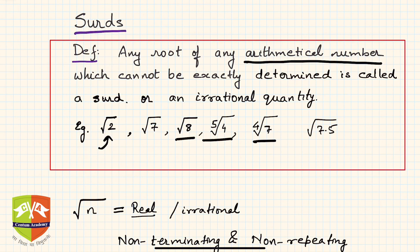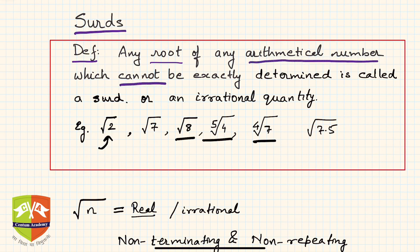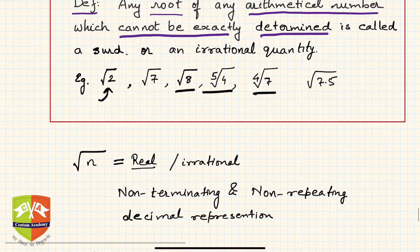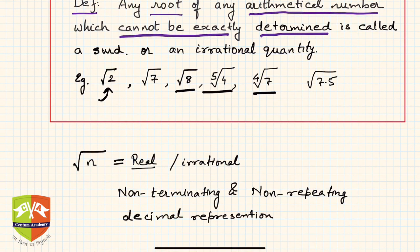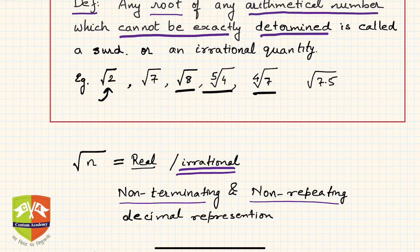Let's start with the definition. A surd is any root of any arithmetic number which cannot be exactly determined. For example, root of two is definitely a real number but not a rational number. Root two cannot be expressed in terms of a recurring decimal or a terminating decimal — its decimal representation is non-terminating as well as non-repeating. So it is basically an irrational number.